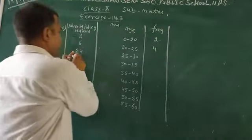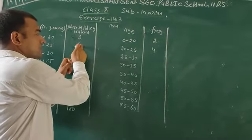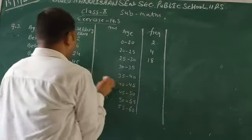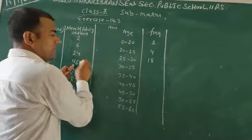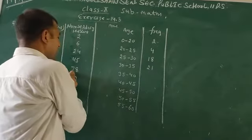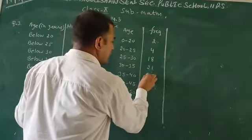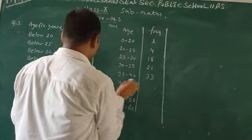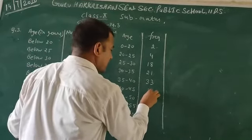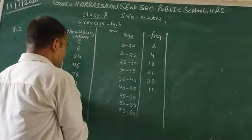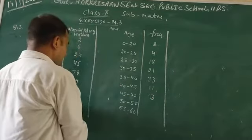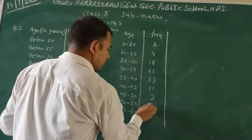Now 24 minus 6 is 18. 45 minus 24 is 21. 78 minus 45 is 33. 89 minus 78 is 11. 92 minus 89 is 3. 98 minus 92 is 6.